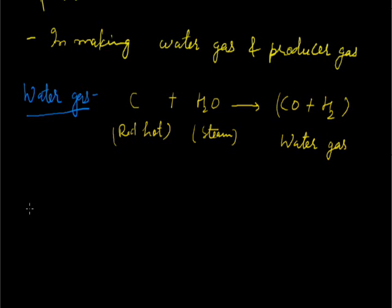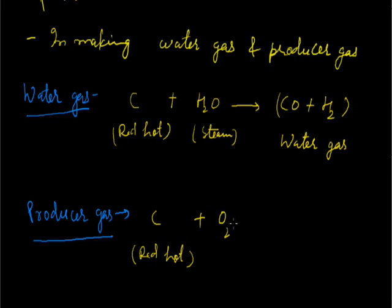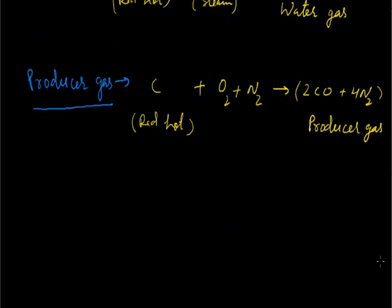The other gas is producer gas. In the preparation of this gas, instead of steam, air is passed over red-hot coke. The components of air, oxygen and nitrogen, are used in the preparation of producer gas. Water gas contains carbon monoxide and hydrogen, both combustible gases, so it is an example of excellent fuel.